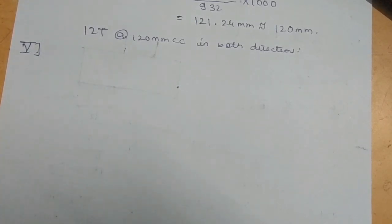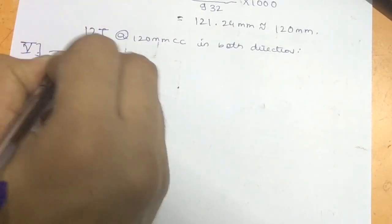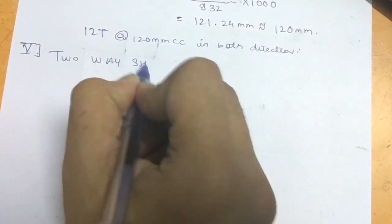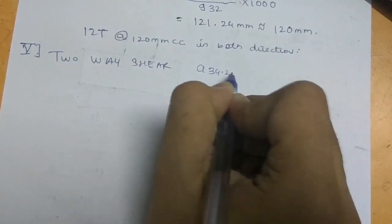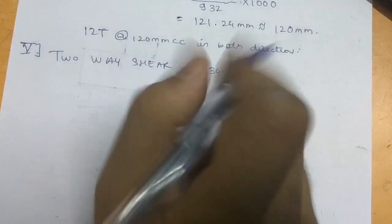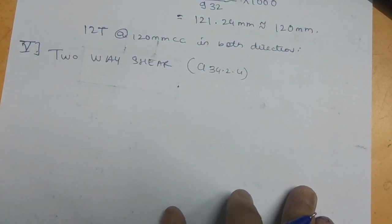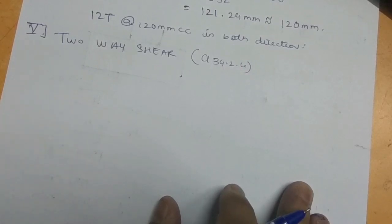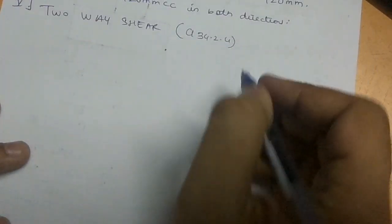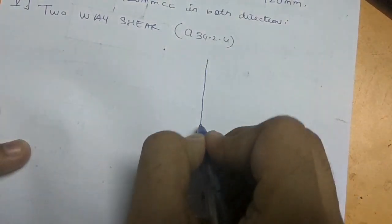The next step is to check whether the slab or footing is safe in shear. This is given in IS code clause 34.2.4. Please watch the previous video linked in the description where I have clearly explained what is two-way shear and one-way shear.